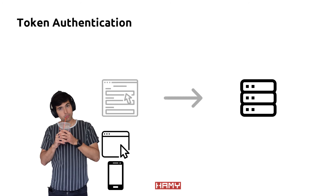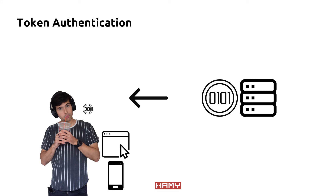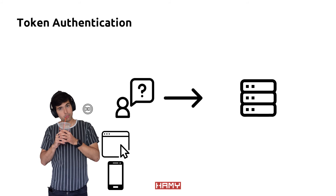First, a user will send identifying information to the web server, like their username or password, or maybe a pin code that they get by text or email. The web server will then verify that information and create and issue a token back to the user. Typically, the browser or web app will hold on to this token for use in future requests. When a user then wants to access a resource, the browser or app will attach the token to that request and forward it on to the web server. The web server can then verify that the token is real and whether or not the user has access to the resource, and return accordingly.